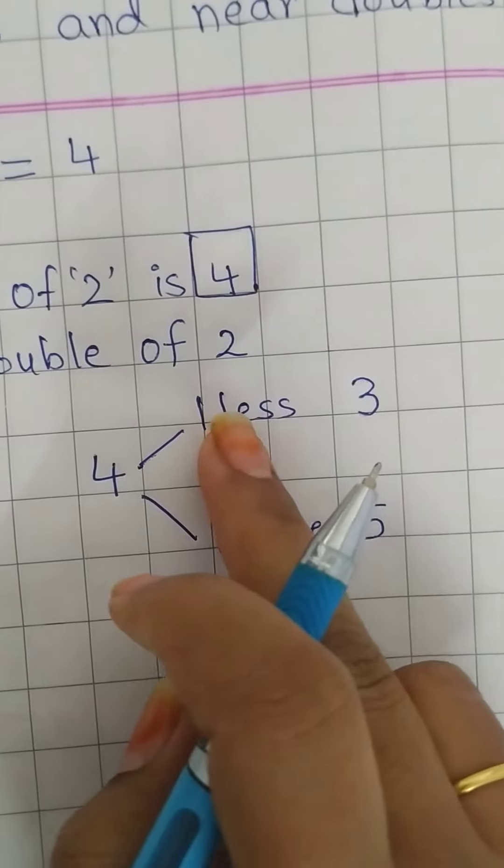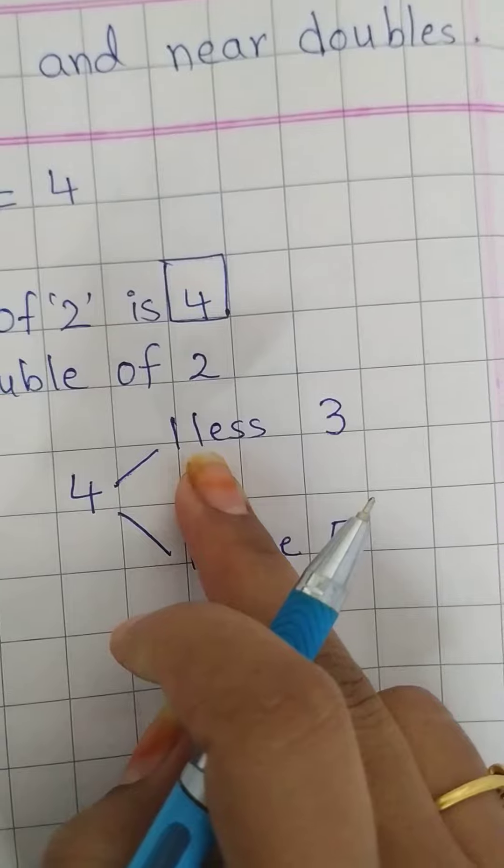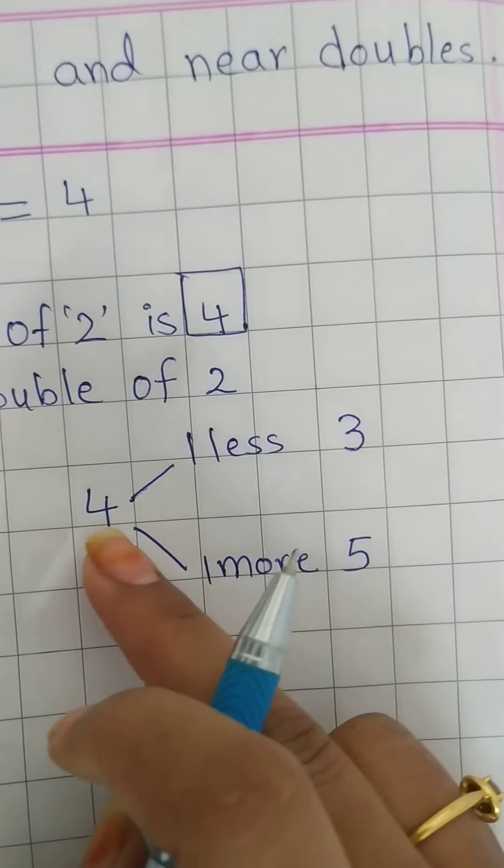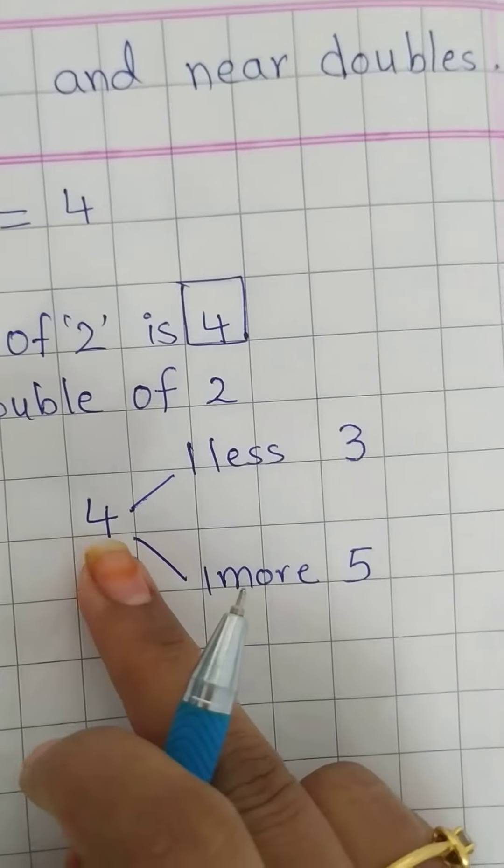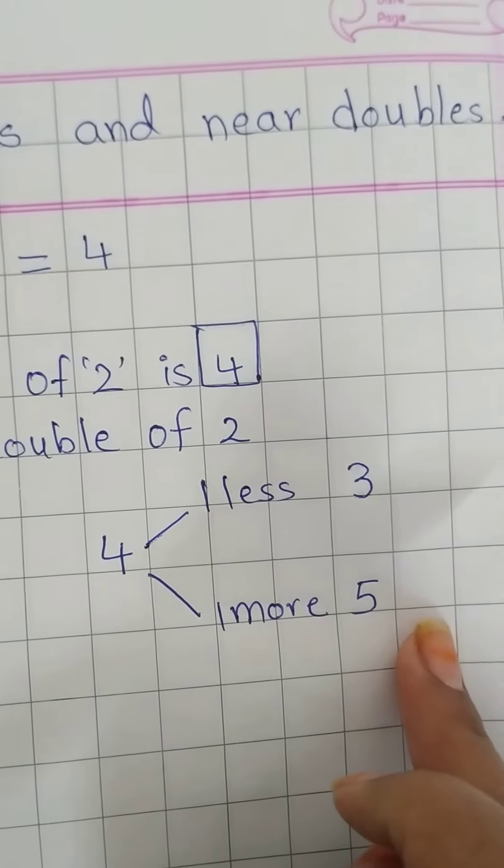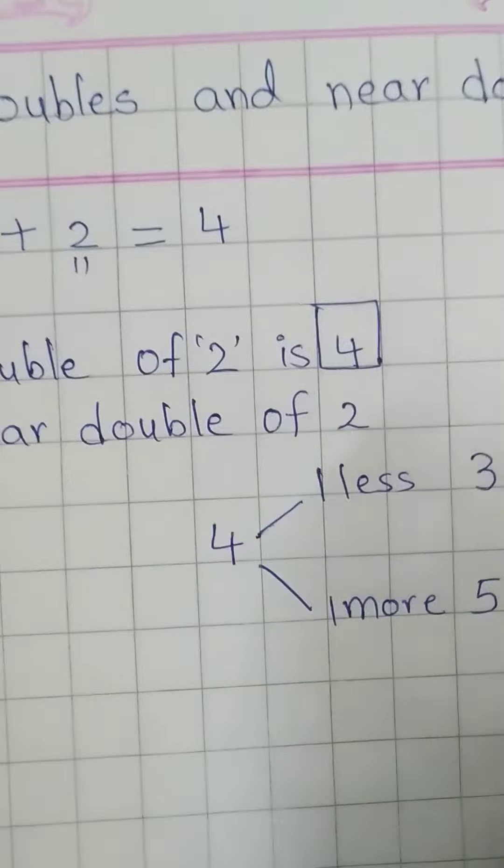1 less to 4. You have to go backward counting. What comes before 4? What come before 4? 3. 1 more to 4 is 5. What comes after 4? 5. So,